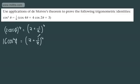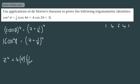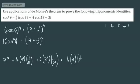I'm going to use the binomial expansion to the power of 4. The coefficients from Pascal's triangle are 1, 4, 6, 4, 1. So we get: z⁴ + 4·z³·(1/z) + 6·z²·(1/z²) + 4·z·(1/z³) + (1/z⁴).